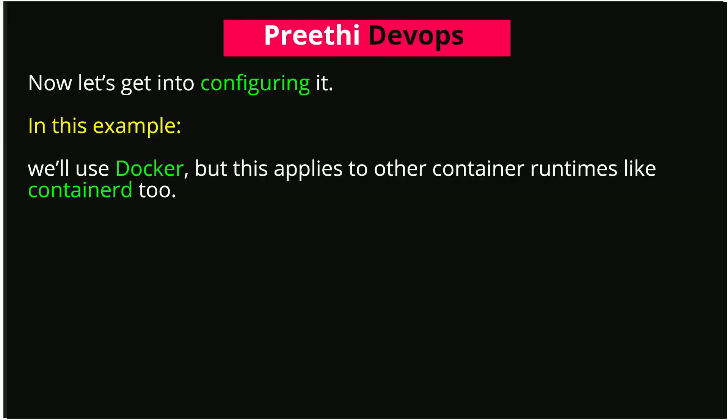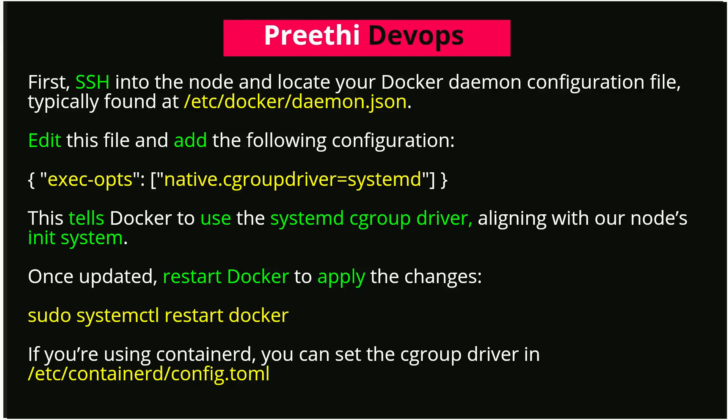Now let's get into configuring it. In this example we'll use Docker, but this applies to other container runtimes like containerd. First, SSH into the node and locate your Docker daemon configuration file, typically found at /etc/docker/daemon.json. Edit this file and add the following configuration: exec-opts, native.cgroupdriver=systemd. This tells Docker to use the systemd cgroup driver, aligning with the node's init system. Once updated, restart Docker to apply the changes: sudo systemctl restart docker.